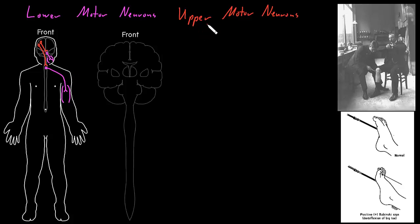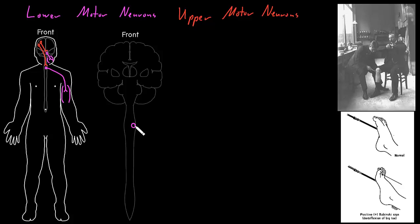We can divide the upper motor neurons into different pathways or tracts depending on whether they go all the way down into the spinal cord or a shorter distance to the brain stem to synapse on lower motor neurons. Here we have the cerebrum up top, the brain stem with the cerebellum behind it, and the spinal cord beneath. A lower motor neuron has its soma inside the spinal cord and sends its axon out through spinal nerves to synapse on skeletal muscle cells in a muscle it controls.